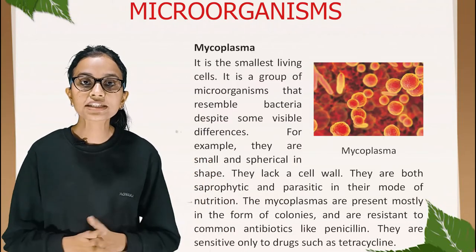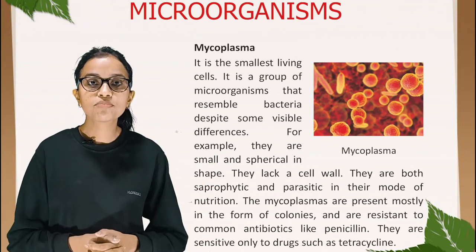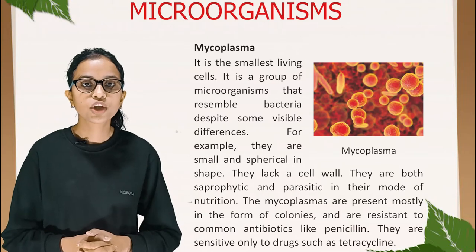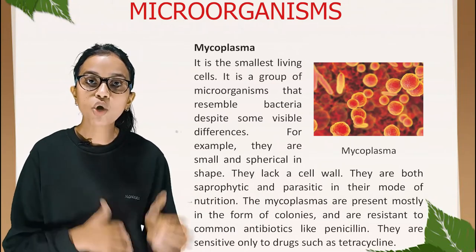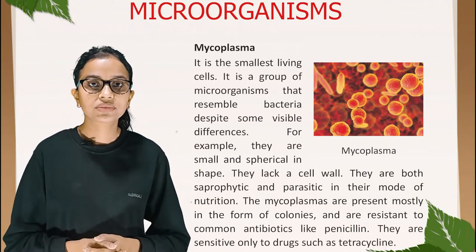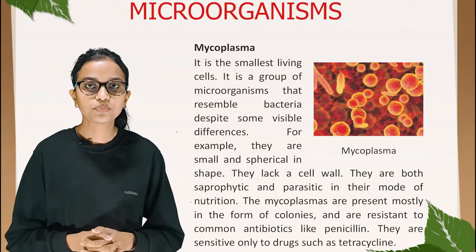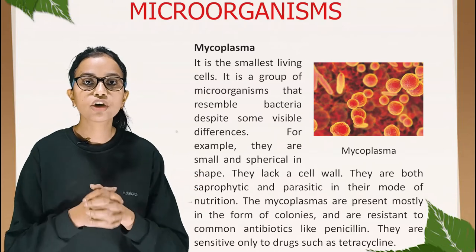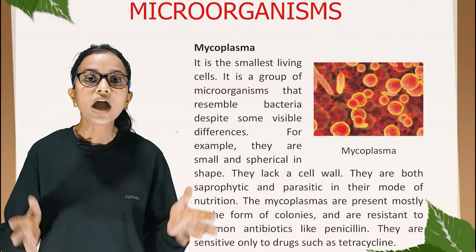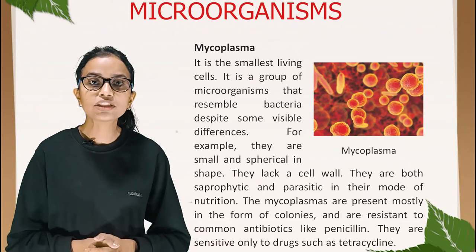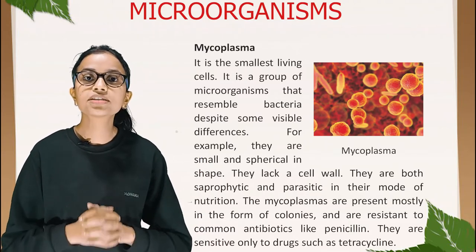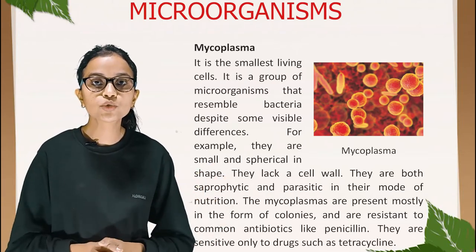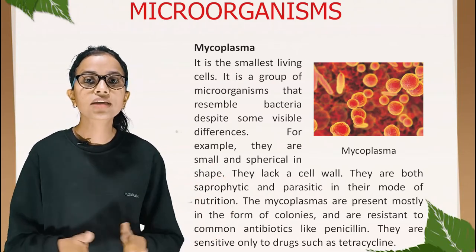Mycoplasma: the smallest living cells. It is a group of microorganisms that resemble bacteria despite some visible differences — they are small and spherical in shape, and they lack a cell wall. They are both saprophytic and parasitic in their mode of nutrition. Mycoplasmas are present mostly in the form of colonies and are resistant to common antibiotics like penicillin; they are sensitive only to drugs such as tetracycline.